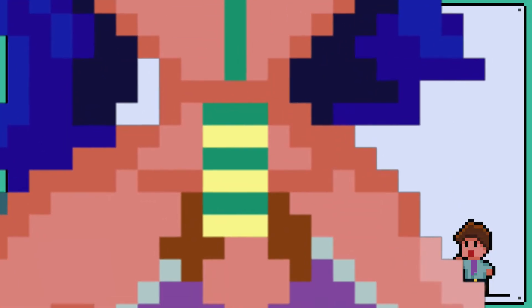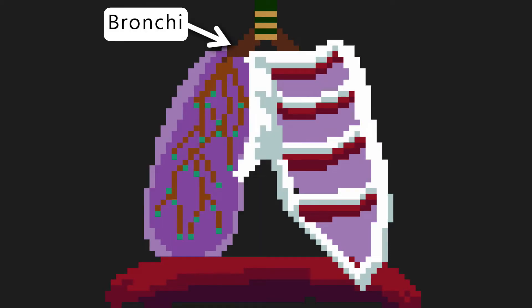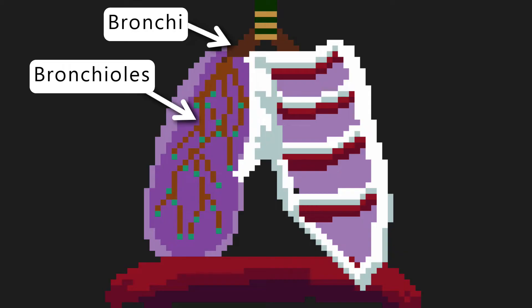Then the air can go down into either the left or right lung via the bronchi. The bronchi then branch out many times, and these smaller branches are called the bronchioles.